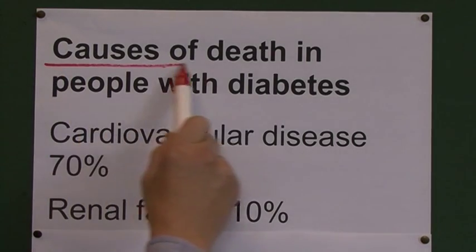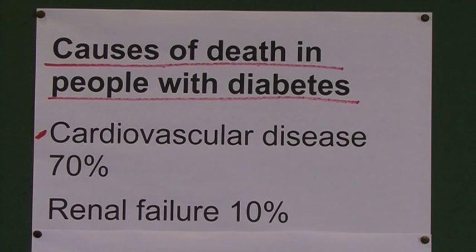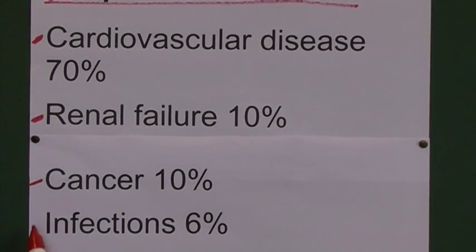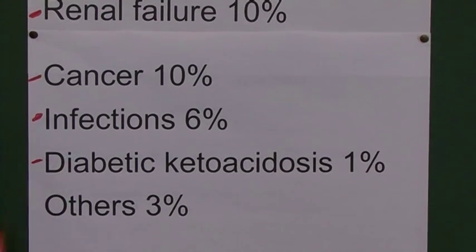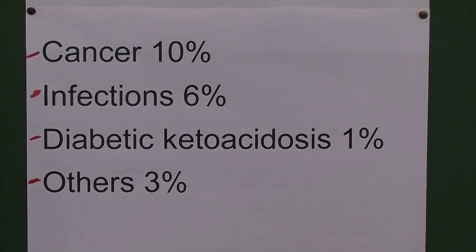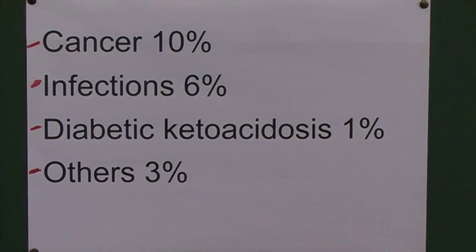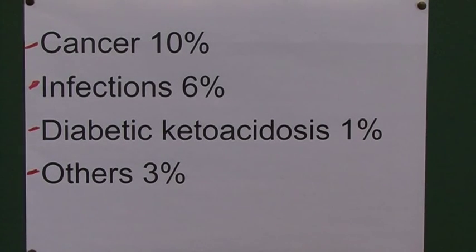So, causes of death in people with diabetes: the most common is cardiovascular disease due to atherosclerosis of the larger arteries, particularly the coronary arteries. Renal failure from diabetic nephropathy. Some still die of cancer. Infections are an increased risk. Diabetic ketoacidosis, thankfully, is rare as long as we have a good supply of insulin. About 3% die from various other conditions. Recognise diabetes early, treat it efficiently, and let's preserve life — giving patients longer life and better quality of life through early recognition and good management.